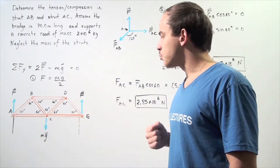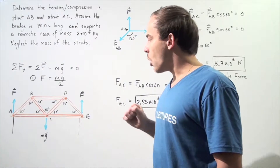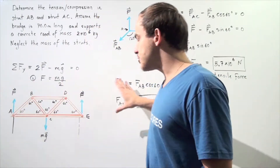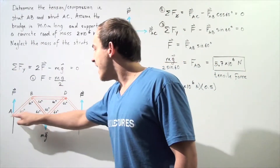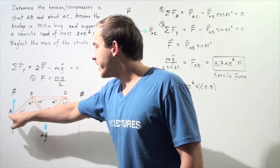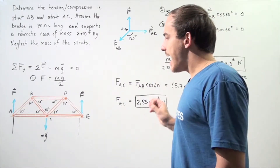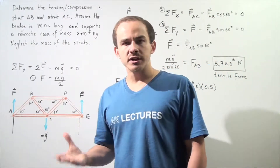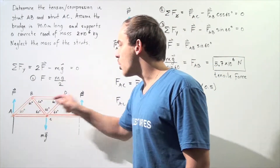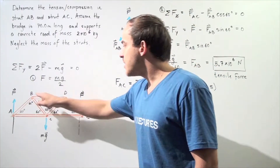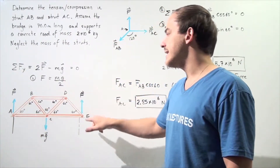Let's suppose we have a three-dimensional bridge, but we're only looking at the two-dimensional side view. We have a beam that connects point A on one edge and point E on the other edge. This beam is supported by a truss system — a network of rods — connected at joints at points A, B, C, D, and E.